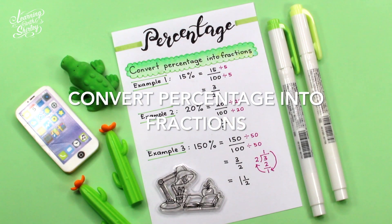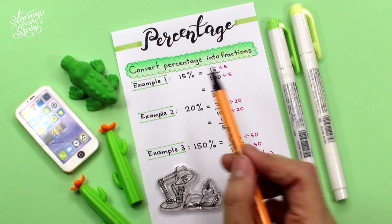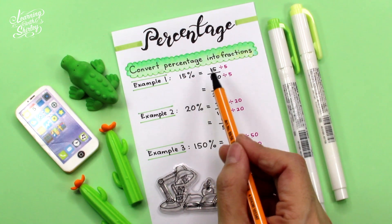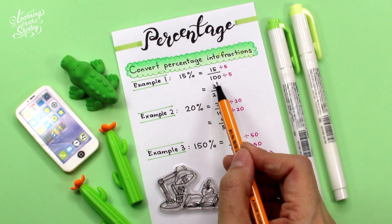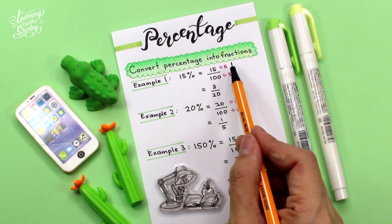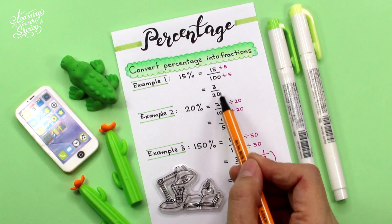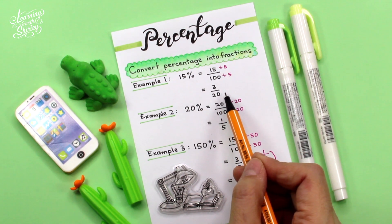Let's take a look at the first basic concept of percentage: how to convert percentage into fractions. Let's look at example one. 15% means 15 over 100. To simplify this, we have to divide top and bottom by 5, and then we'll get 3 over 20.